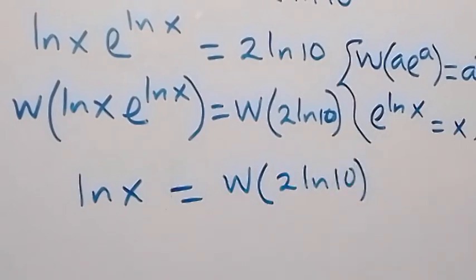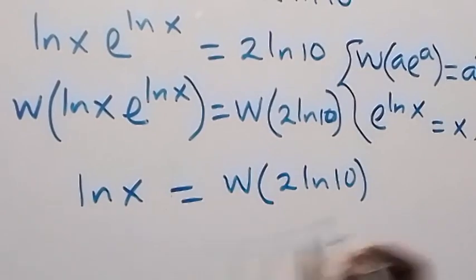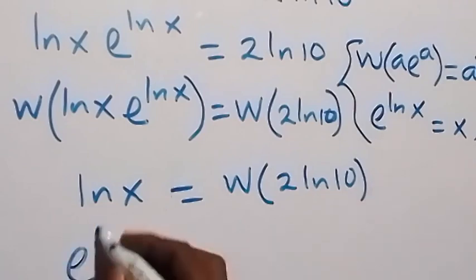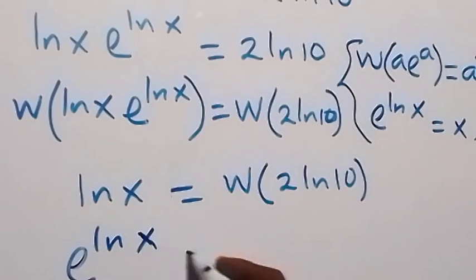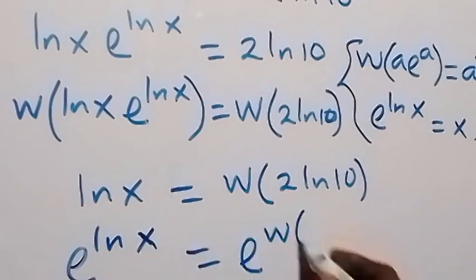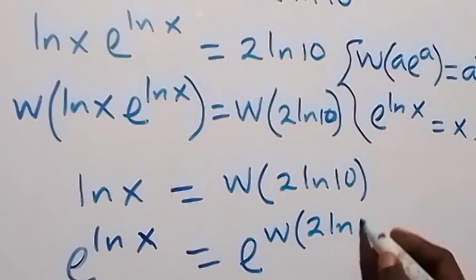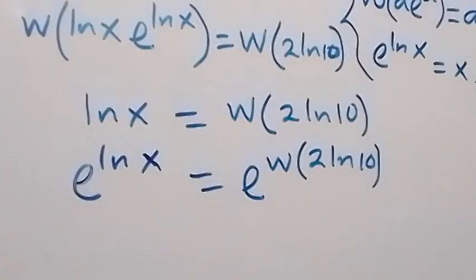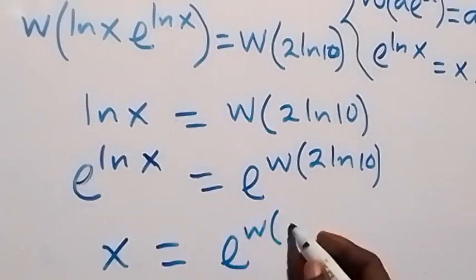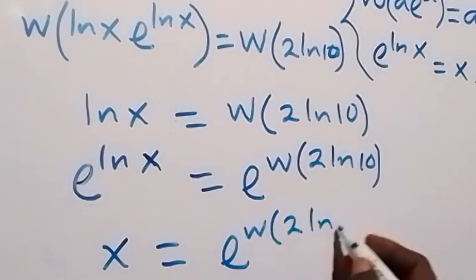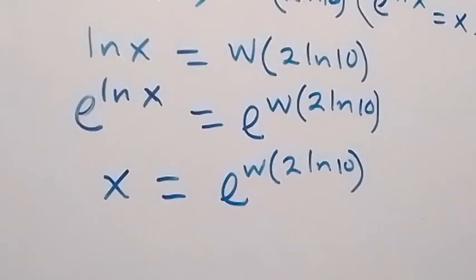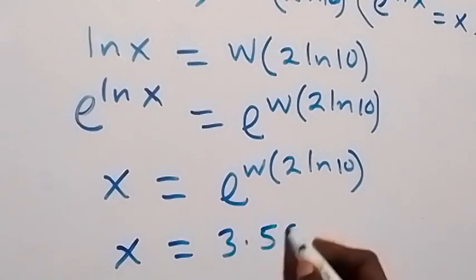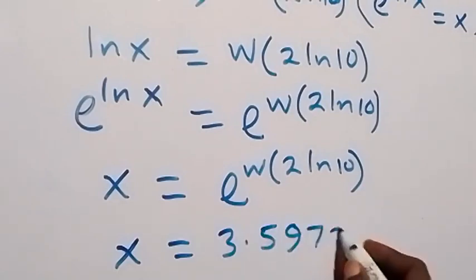Then also from here, to make this side equal to x, we take e to the power of both sides. This gives us e^(ln x) equals to e raised to the W function of 2·ln 10. This simplifies to x equals to e raised to the W function of 2·ln 10, which gives us x equals to 3.597285.